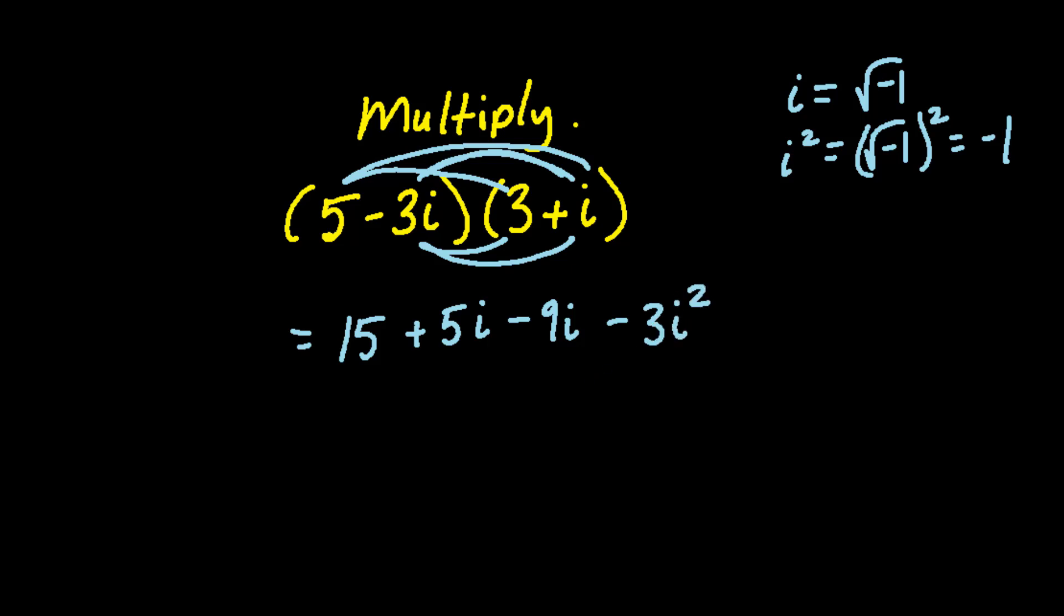We have some simplifying still to do. We need to change the i squared to negative 1. So that will get multiplied by the negative 3 attached to it. The 15 can drop down at this point since it's simplified. 5 minus 9 is negative 4. So this term becomes negative 4i.